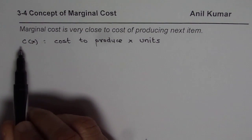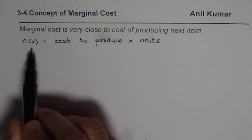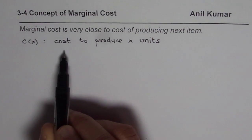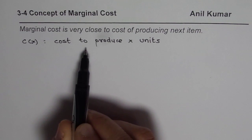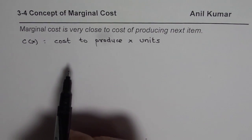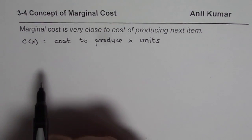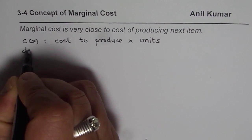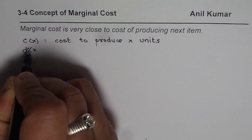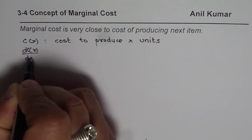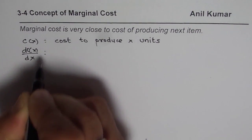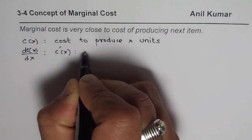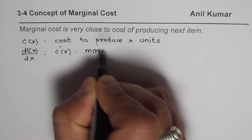So let us begin with C of X, which is the cost function. C of X will normally be given to you and is the cost to produce X items. And if you need to find marginal cost, we will just take the derivative of this function — that is dC of X with respect to the number of items being produced, or C prime of X. That is referred to as marginal cost.